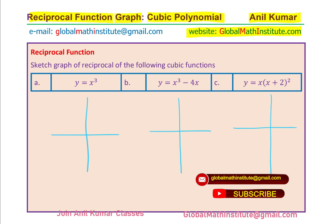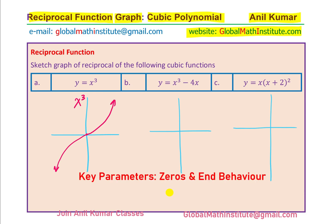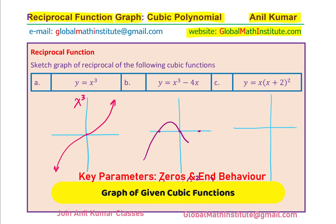To begin with, y equals x cubed has a zero at the origin. The graph is an odd function which looks like a standard cubic curve. The second one, x cubed minus 4x — when you factor x out, you get x times (x squared minus 4), which is x times (x plus 2) times (x minus 2). So the graph has three zeros: at plus 2, minus 2, and 0. With a positive leading coefficient, the graph rises to the right.